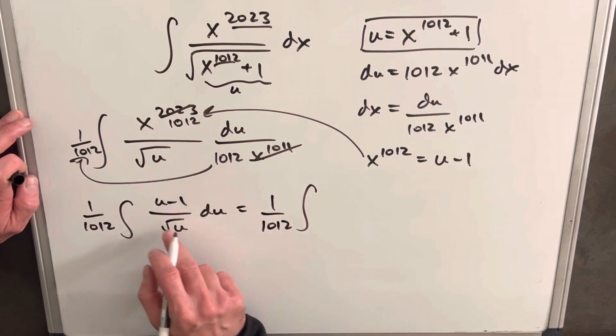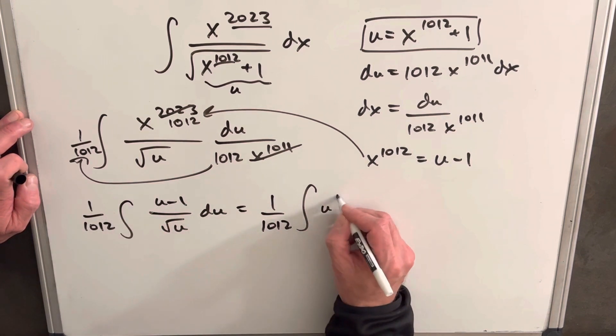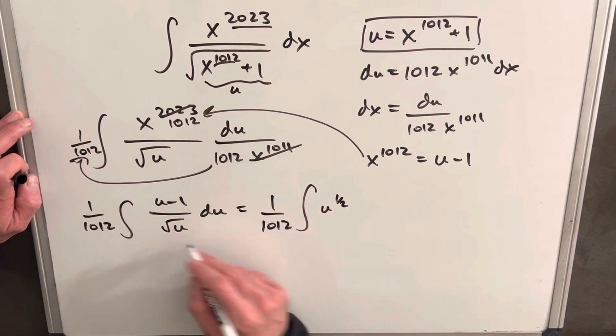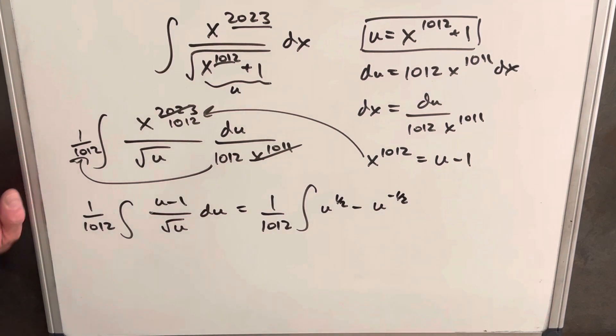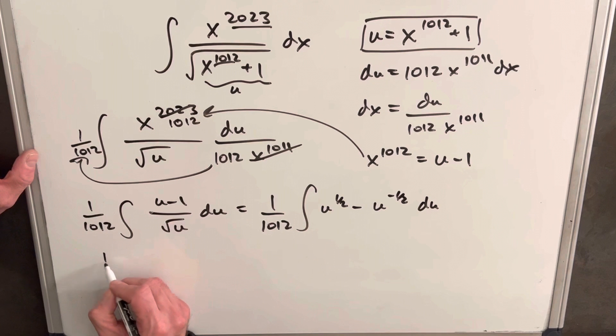Square root of... we divide u by square root of u, we're going to have u^(1/2), then we're going to have minus u^(-1/2), and we can just use the power rule du.